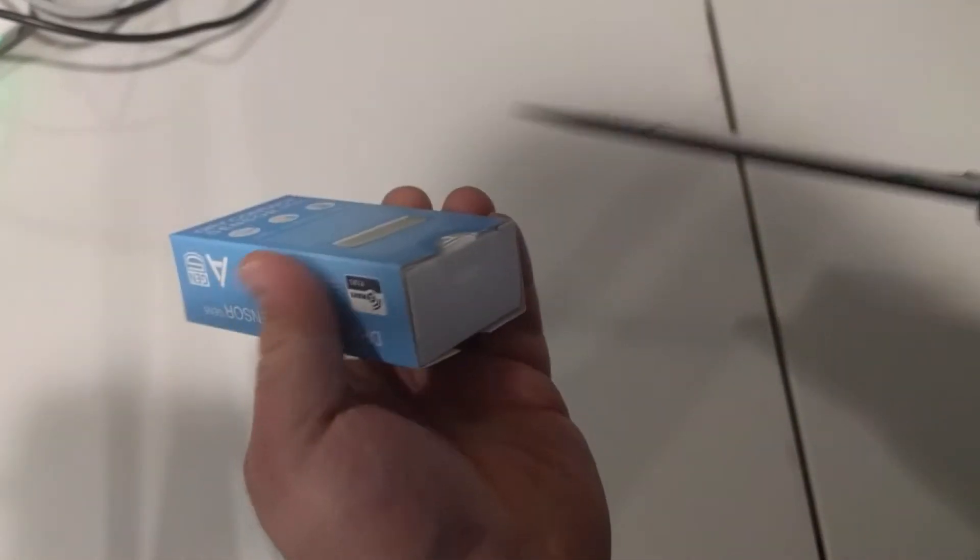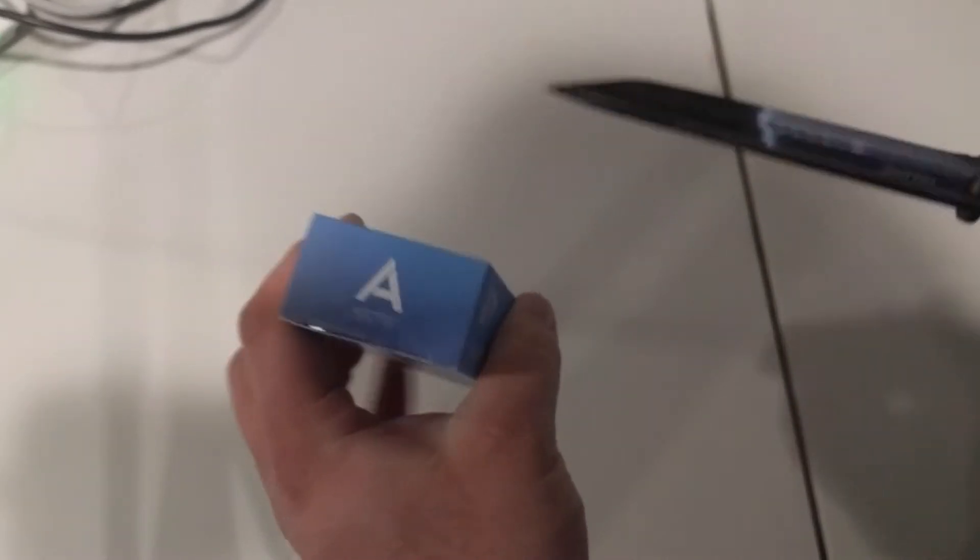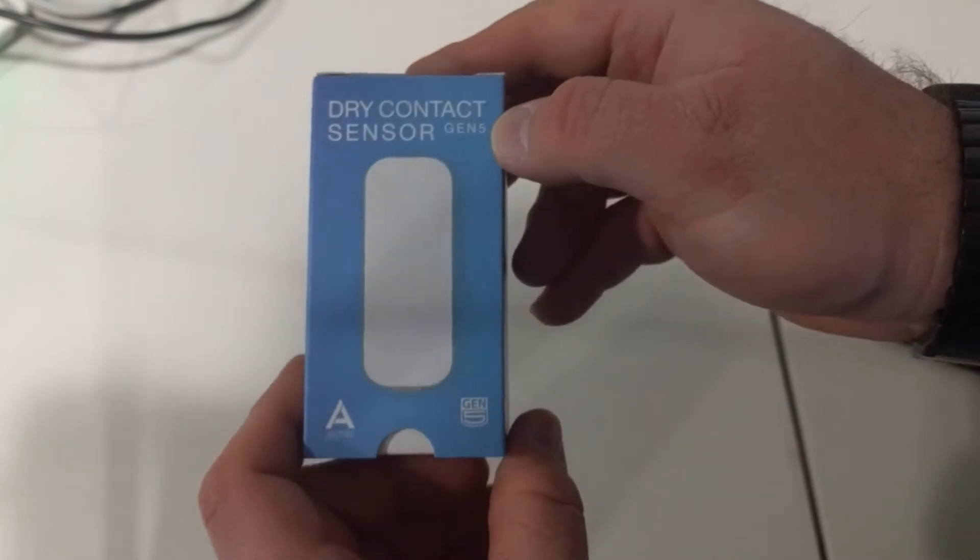Let's go ahead and cut the tabs here at the bottom. It's already starting to slide out. So it is a dry contact sensor Gen 5.